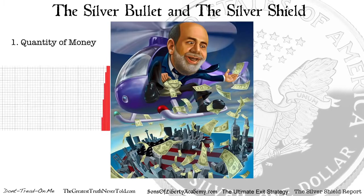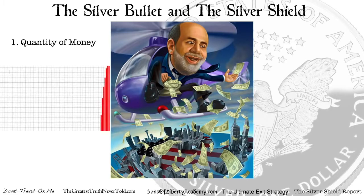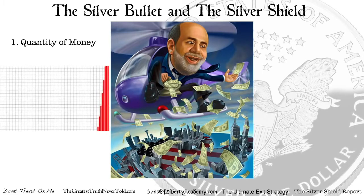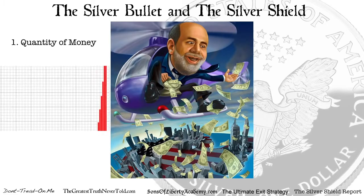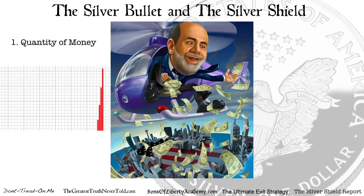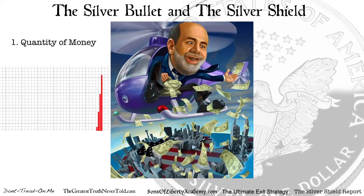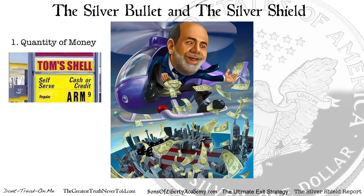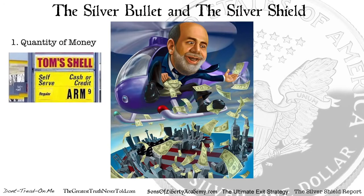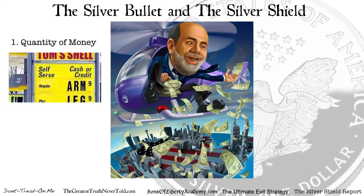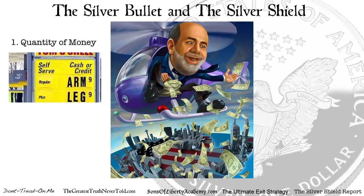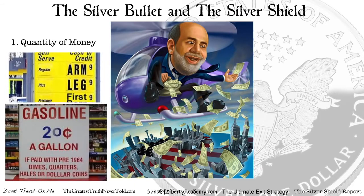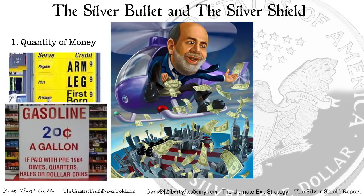If we double the money in quantity relative to the goods and services, the end result is that prices will double because there are twice as many dollars chasing after the same amount of goods. This example shows that it's not really that the prices are going up so much as the value of those dollars are going down, and that you need more dollars to buy the exact same amount of goods and services.